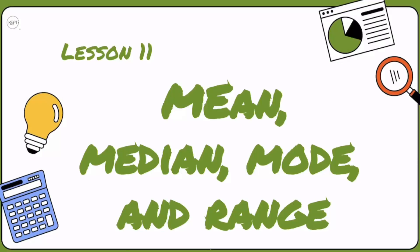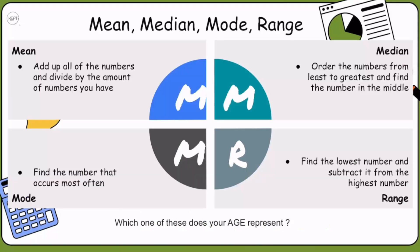Lesson 11: Mean, Median, Mode, and Range. First, we have the mean. You may have heard the mean referred to in class as the average. These two things mean the same thing. How do we find the mean or the average? We add up all of the numbers and divide by the amount of numbers that we have.